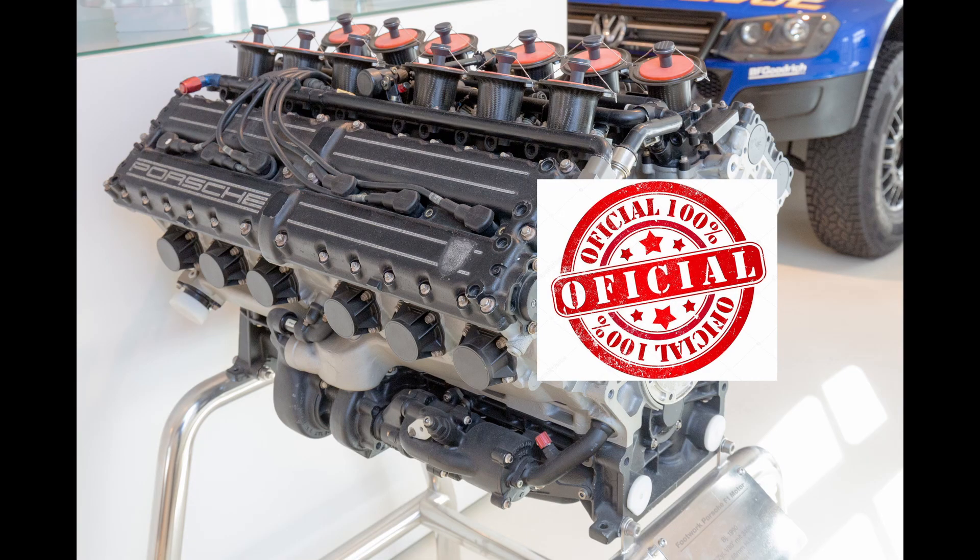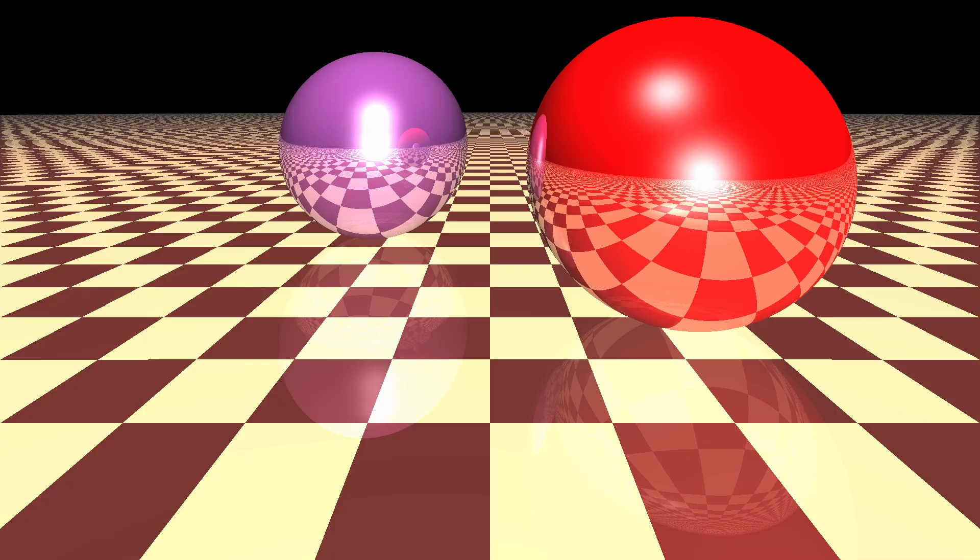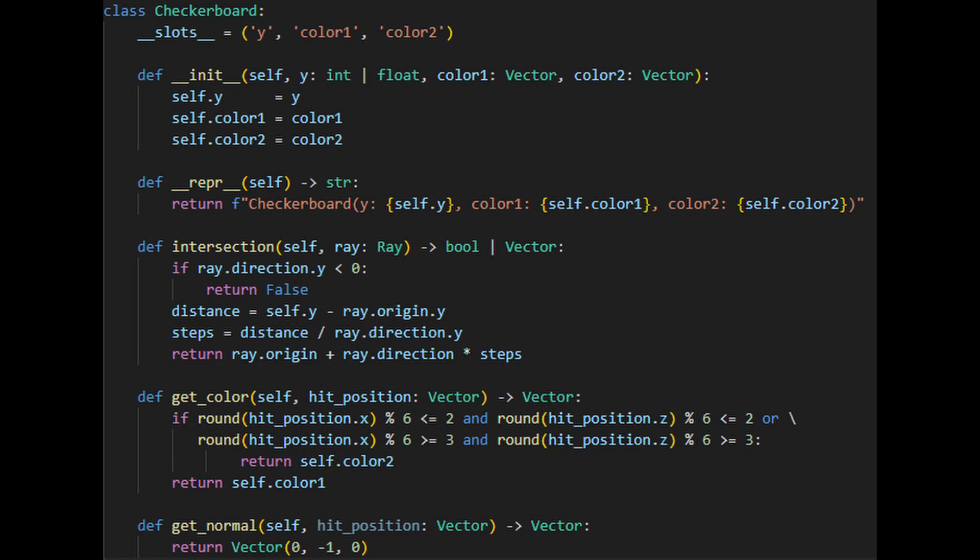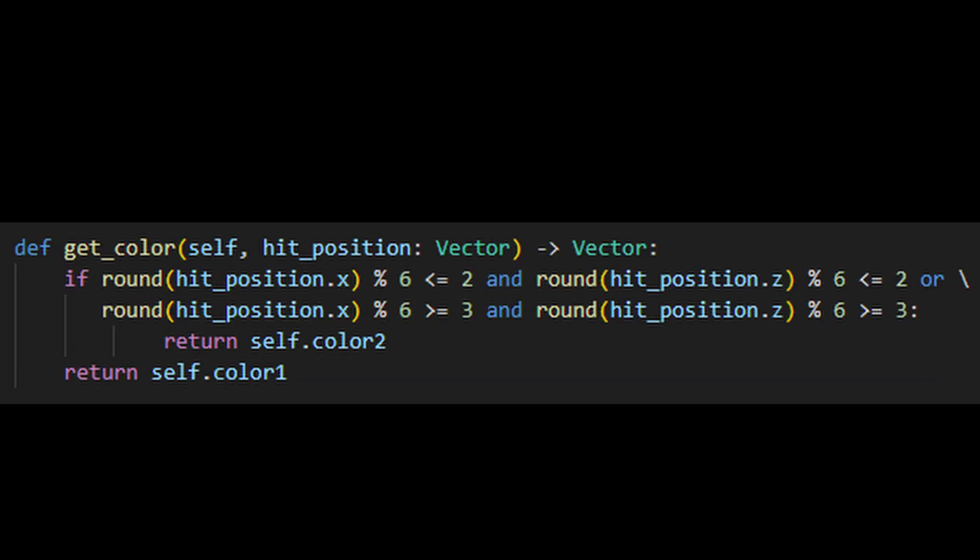Now to make this engine official, we need that checkerboard that every basic ray tracer has for some reason. This is easier to implement than the sphere, because all you really need to do is check if the ray will ever go under a certain y level and see where it ends up on the plane. Then we can grab the coordinates and plug them into an if statement to return one of its two colors.